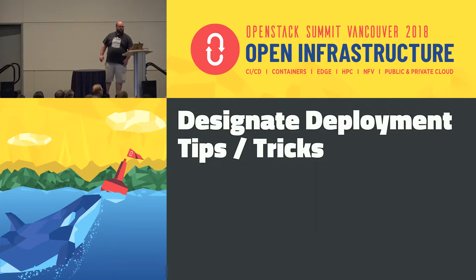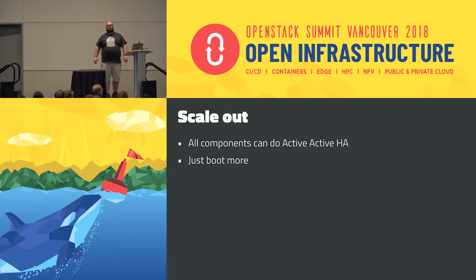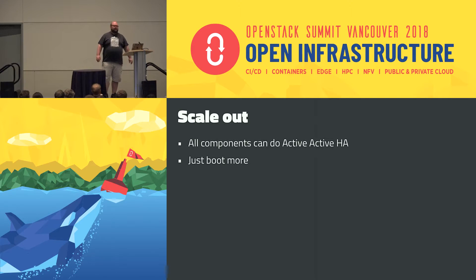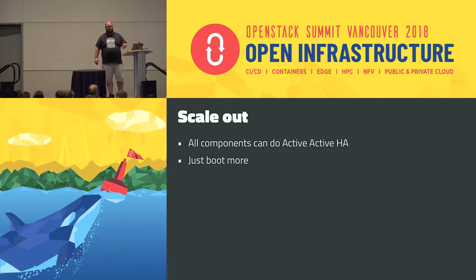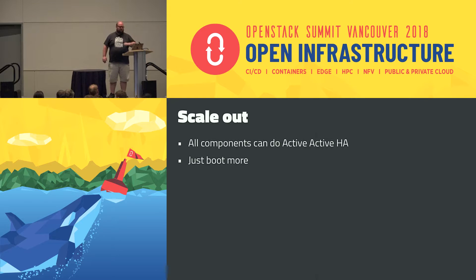Designate is very simple to scale. Everything in our project can do active-active HA and scale horizontally. As long as we're connected to the same RabbitMQ and the same database, you just boot more instances. It was designed to run on one machine and also run in a fleet. This applies if you run the Designate producer or worker model — the older zone manager or pool manager architecture had HA limitations, but the new architecture was redesigned specifically to allow scale-out.